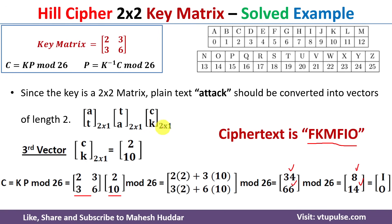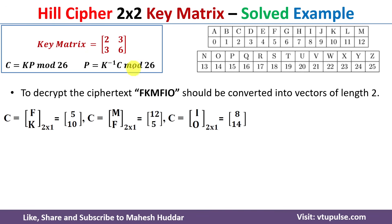Combining all three encrypted vectors, the full ciphertext is FKMFIO. The plaintext 'attack' has been converted into ciphertext. Now we need to decrypt this ciphertext back to plaintext using the decryption equation. Since the key matrix is 2x2, the ciphertext is split into vectors of length 2: FK = [5, 10], MF = [12, 5], and IO = [8, 14]. We need to calculate K-inverse first.